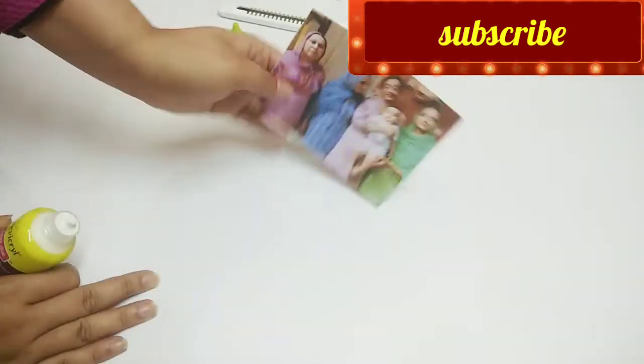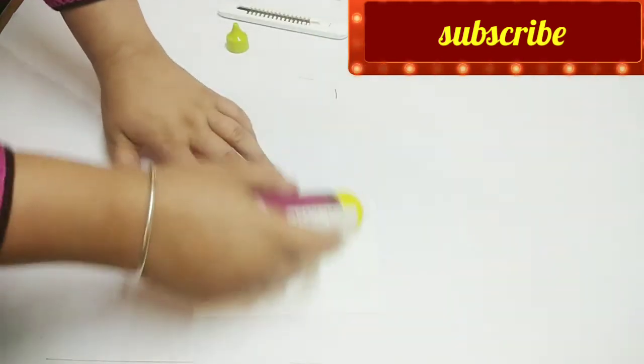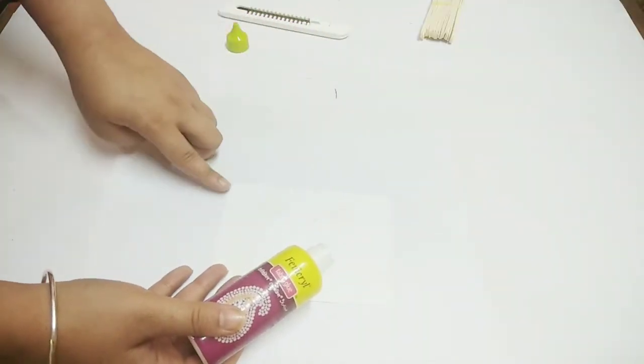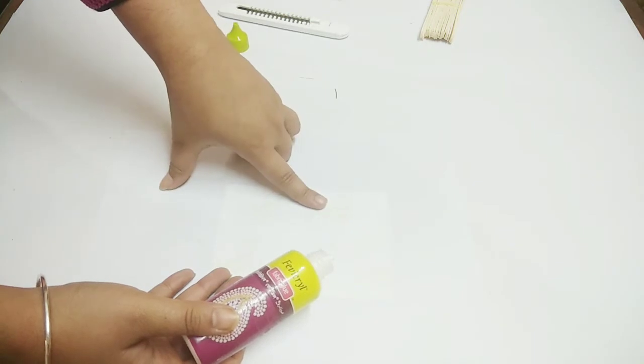Let's start making it now. First of all, we will turn back the photo and spread favicol all on it. Make sure that you cover it all because we will put sticks on it.